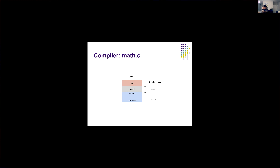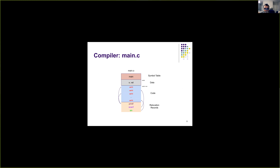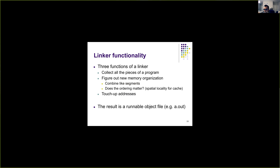Once the compiler is done producing object files, the linker comes in. The linker has three functions: it collects all pieces of information from all the object files given, it figures out the new memory organization needed for the executable it is about to produce, it combines all the segments from different object files, and finally it replaces the relocation entries — the appropriate locations — with the actual addresses of functions. In our case, it replaces the call instruction in main with the address of the sin function. Finally, the linker produces the executable file, the .out file that we run.